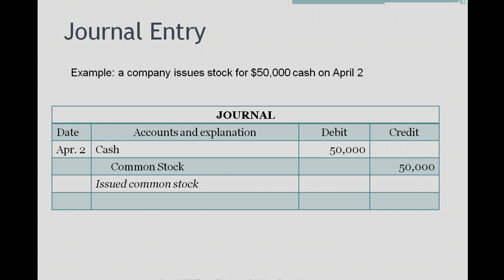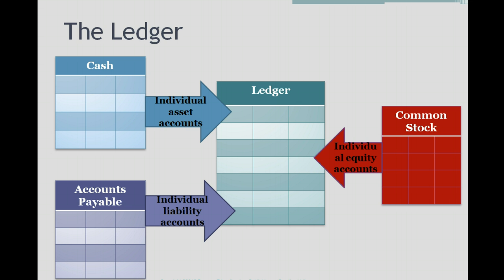To summarize, the journal is where we enter each transaction as it happens, in chronological order. Once all the journal entries are entered in the journal, periodically they get posted to the ledger. The ledger is simply a collection of all your T accounts — remember the T accounts where I showed you the debit-credit rules? Those accounts are in the ledger, which is a book that holds all the company's accounts.